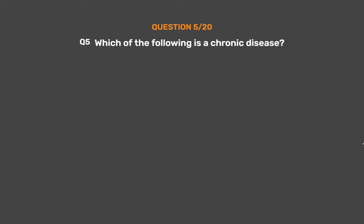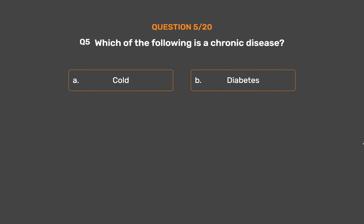Question number 5. Which of the following is a chronic disease? Option A: Cold. Option B: Diabetes. Option C: Influenza. Option D: Typhoid.